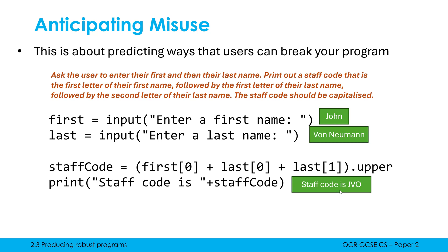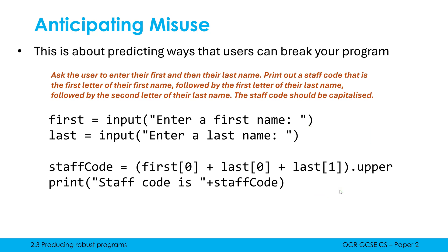One of the issues is we are indexing this string, and that means we need there to be a character at that particular position. So let's say the user typed in Ada as their first name — perfectly valid, no issue at all with Ada.